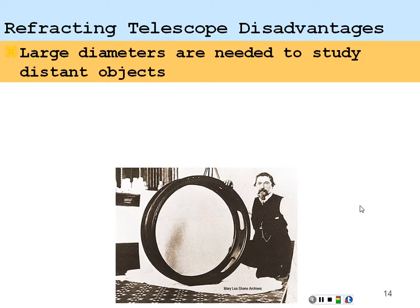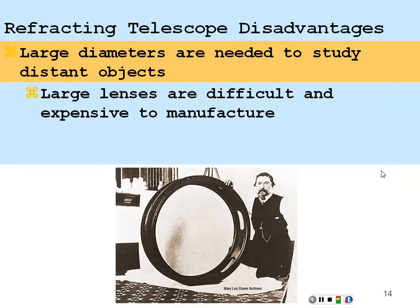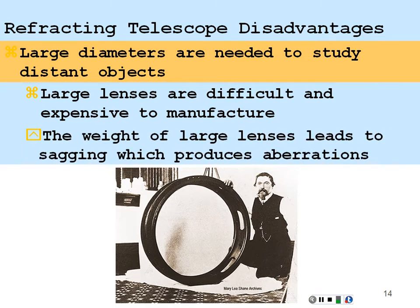Refracting telescope disadvantages. Large diameters are needed to study distant objects and because you have large diameters they're difficult and expensive to manufacture to create a large lens like that. And the weight of a large lens leads to sagging which produces aberrations. So the glass is actually amorphous and it's actually a real slow-moving liquid and so if you had a large lens under gravity eventually the glass would move and create aberrations to your image.